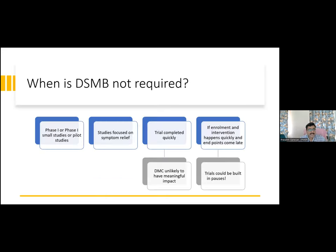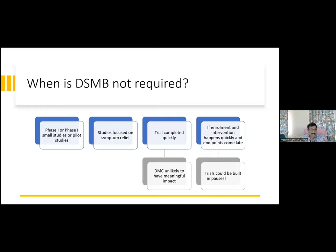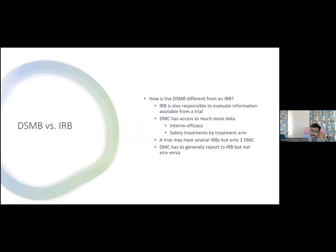A DSMB is generally not required for phase one, phase two, or small pilot studies, since by the time a DSMB is constituted the trial may already be complete. Studies focused only on simple endpoints like symptom relief, or those completed quickly, may not need a DSMB. However, for high-risk trials that are completed quickly, a staggered approach — pausing the trial between cohorts to review data — may be used instead.